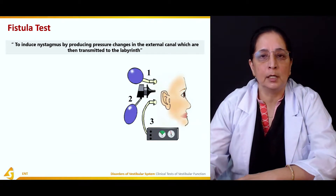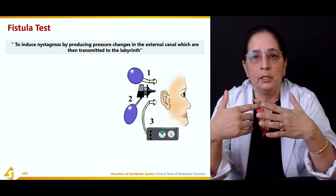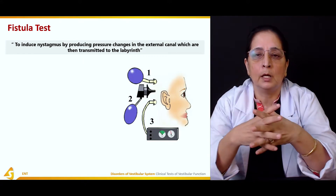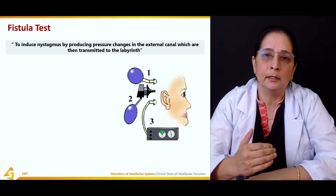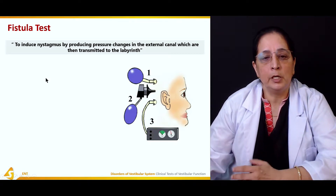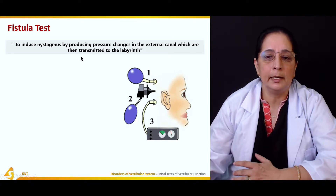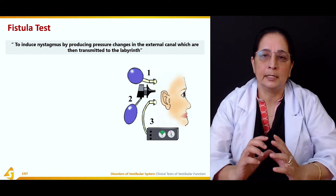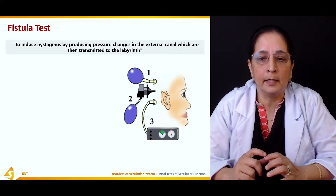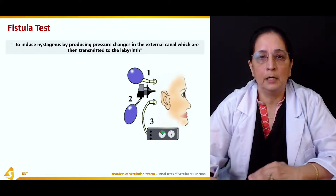The second test is the fistula test. Fistula is a connection between two structures. In the ear, there is usually a perilymph fistula — leakage of fluid from the internal ear to the middle ear through the oval and round windows. In this fistula test, pressure is created in the external ear canal which is then transmitted to the inner ear or labyrinth, and this increase in pressure causes nystagmus or involuntary rhythmical movement of the eye.